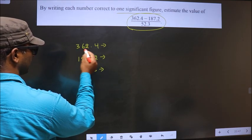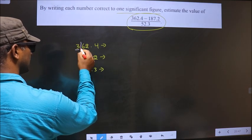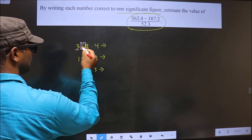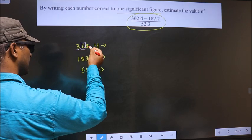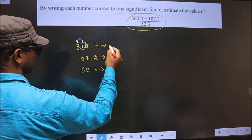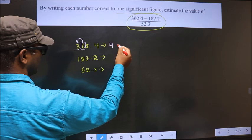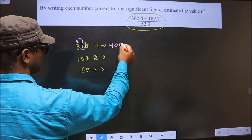Starting from this side, this is first, this is second significant number which is 6. Greater than 5, so we should add 1 to this, making it 4. And rest of the places you put 0.